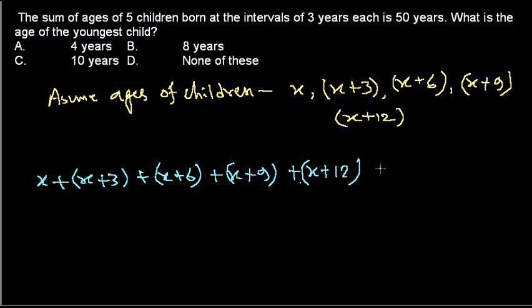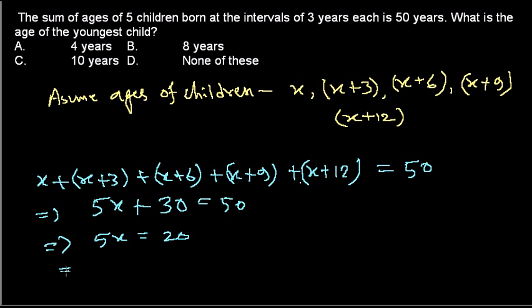The sum is 50 years. If this is the equation, now anybody, even a primary school student, can solve this problem. How many x's are there? One, two, three, four, five. So 5x plus the values here: 3 plus 6 is 9, plus 9 is 18, plus 12 will be 30. So 5x plus 30 equals 50. Then 5x equals 50 minus 30, which is 20.